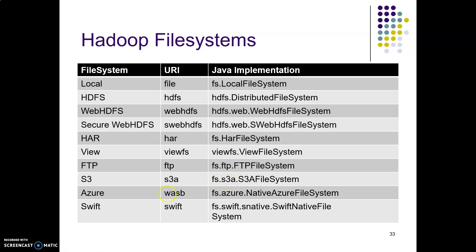For Microsoft Azure, we use 'WASB' as the URI and the Java implementation is 'fs.azure.NativeAzureFileSystem'. Similarly, for Swift, the URI is 'swift' and the Java implementation is 'fs.swift.snative.SwiftNativeFileSystem'. These are some of the file systems used inside Hadoop.